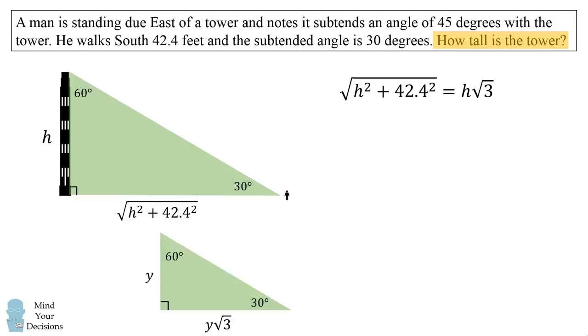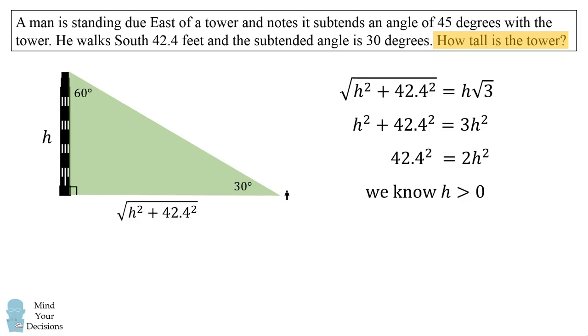We then square both sides of the equation. Then we collect the h squared terms. And then we solve for this equation knowing that the height has to be a positive quantity. We end up that the height of the tower is equal to 21.2 times the square root of 2, which is approximately 29.98 feet. And we figured out how tall the tower is.